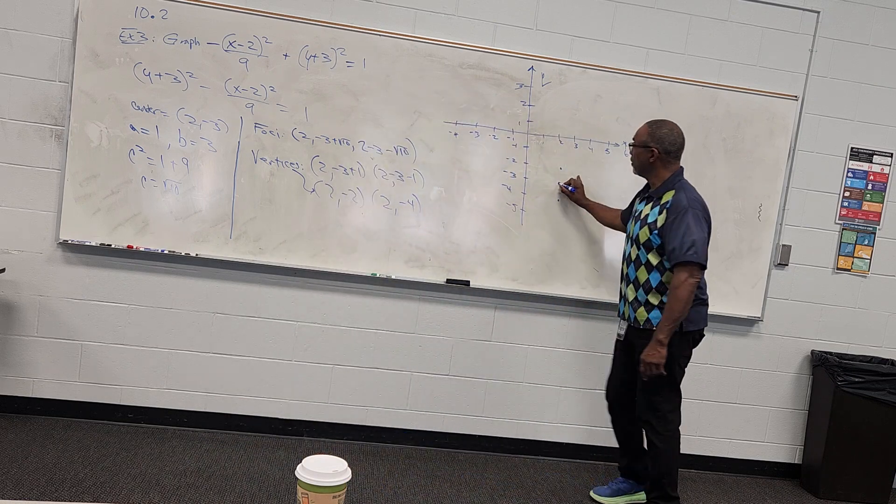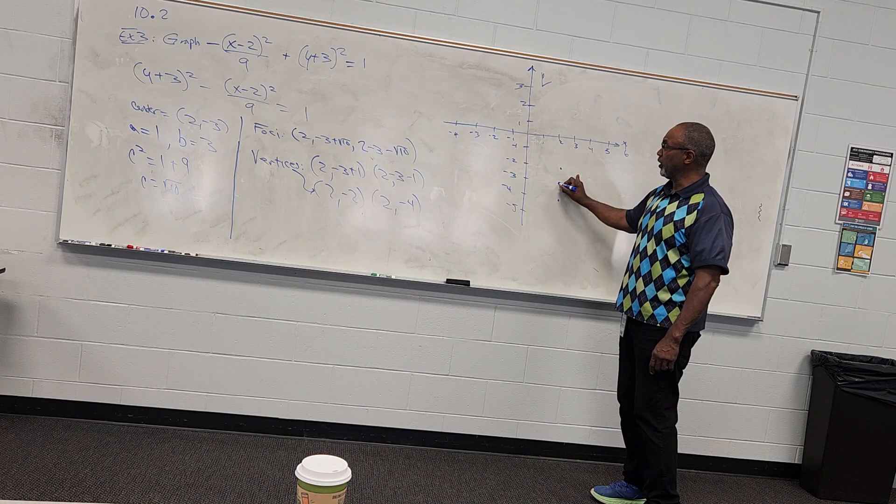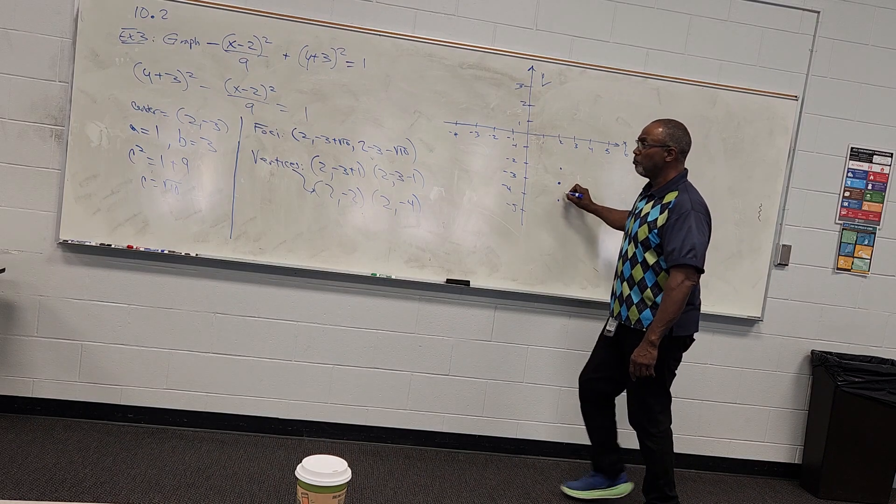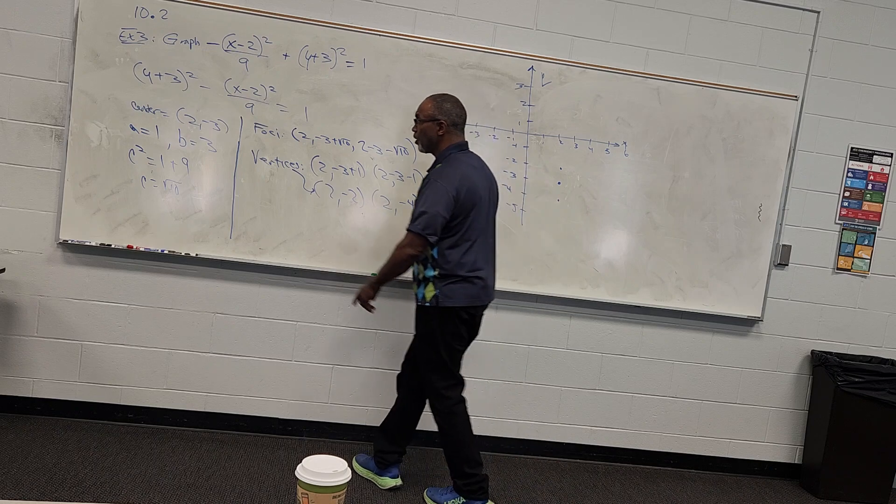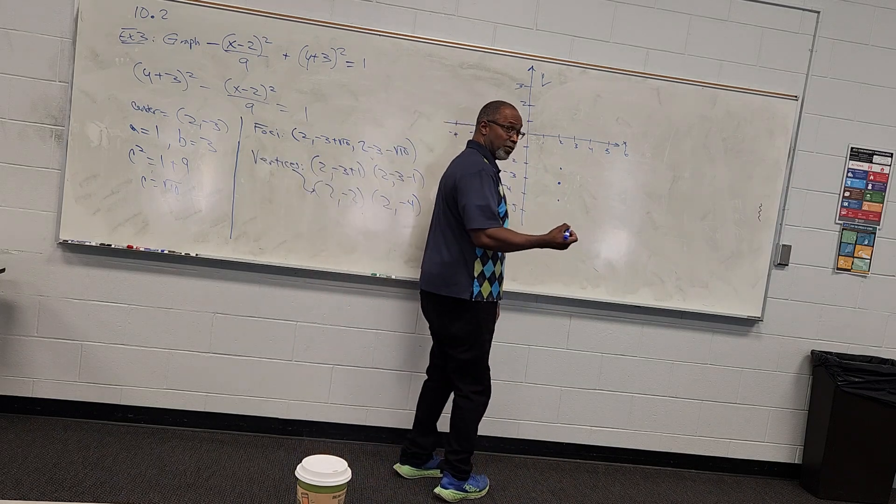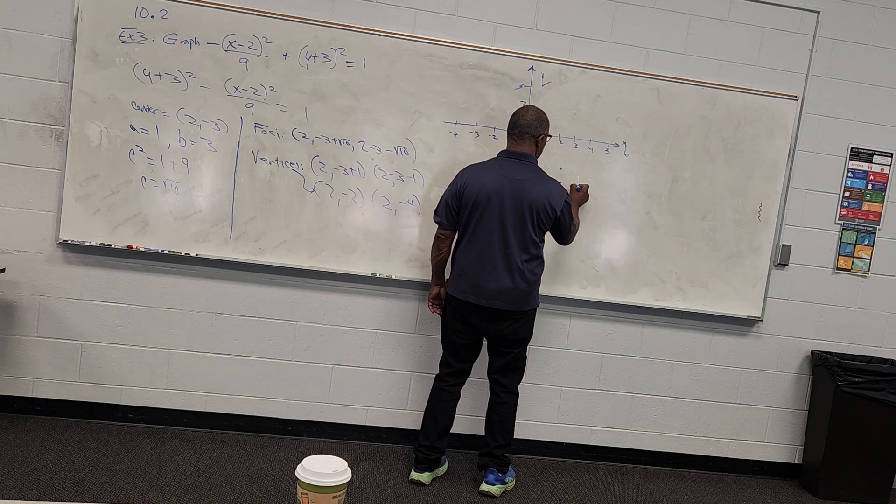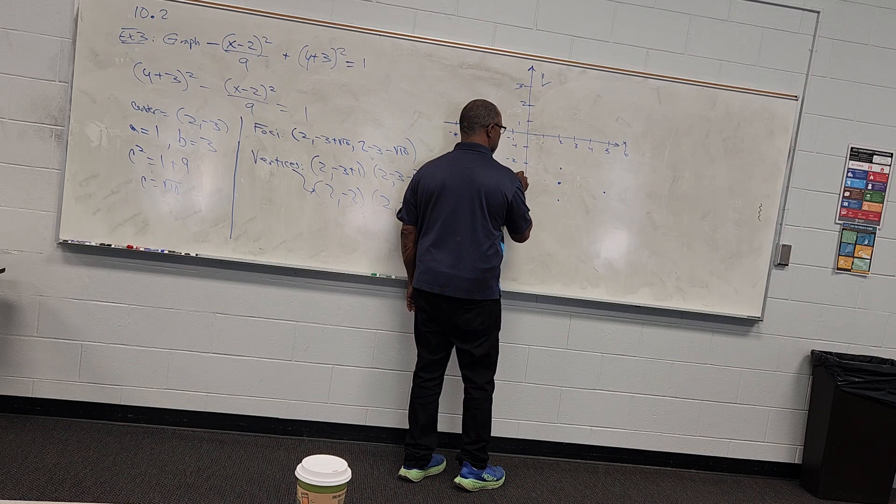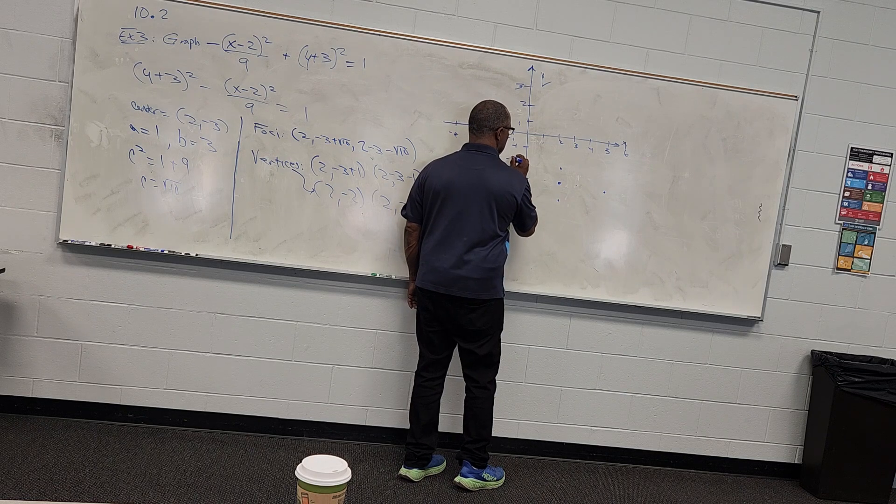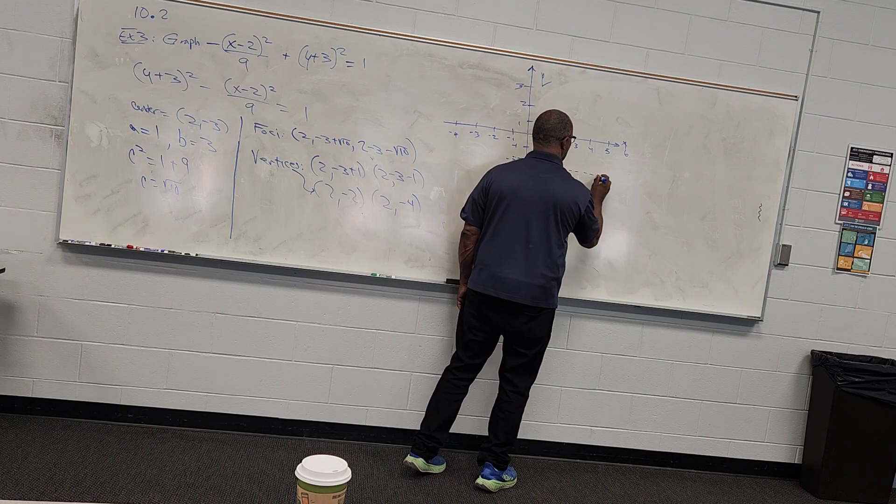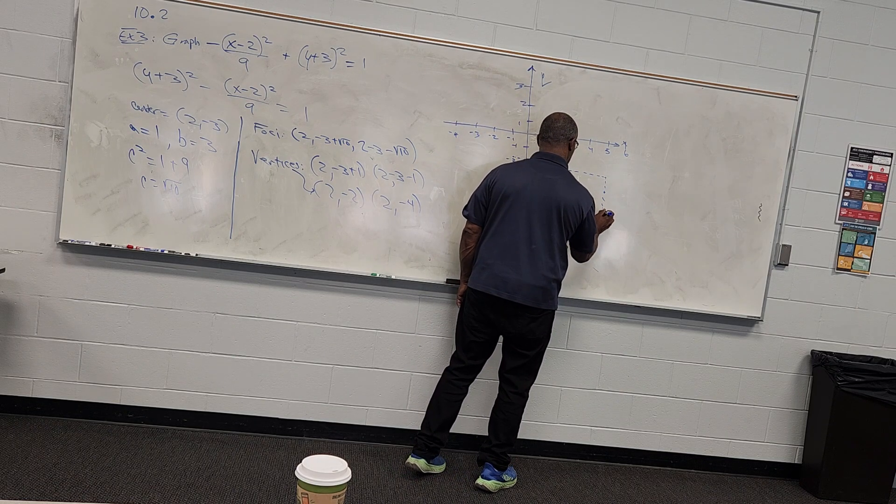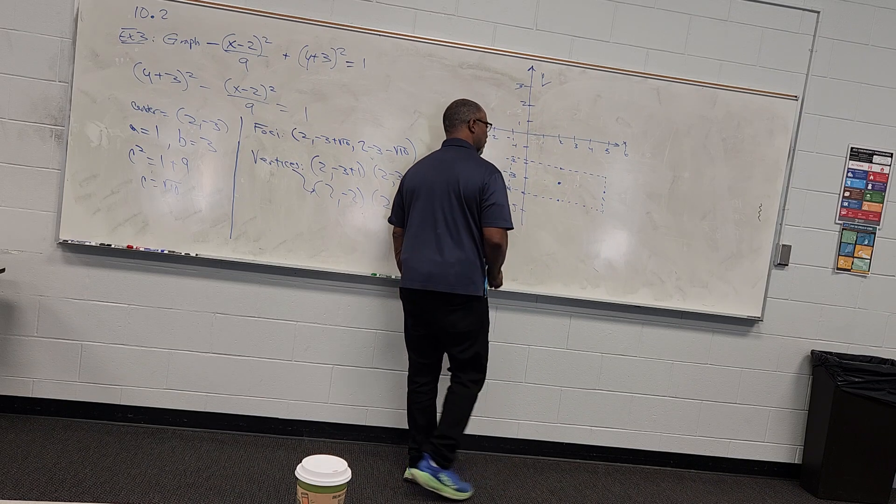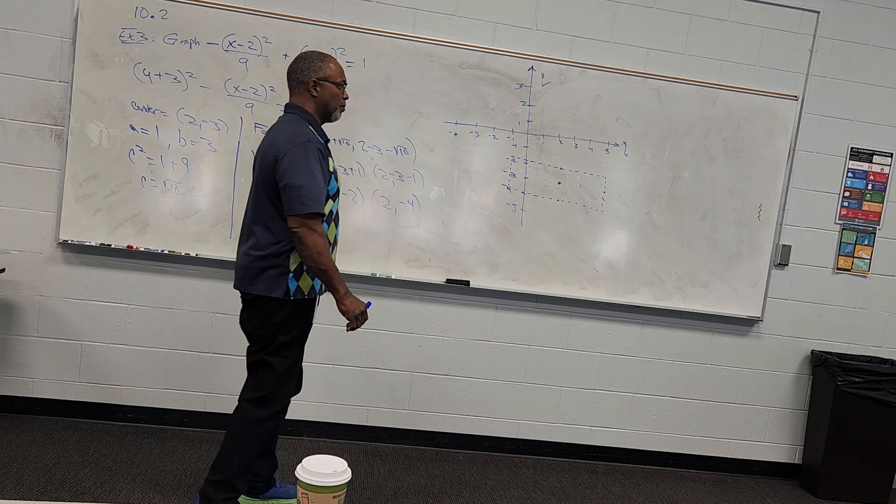So plot your center. Go over 2, down negative 3. That's right here. a is 1, so I go up 1 and down 1. b is 3. I'm trying to draw my box. So I start in my center. I go 3 units, 1, 2, 3, right here.